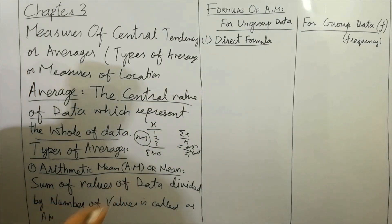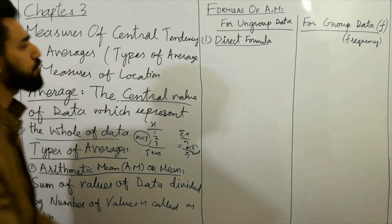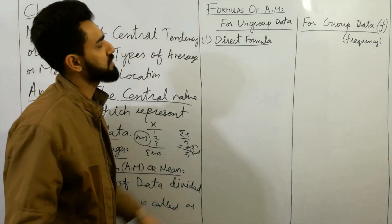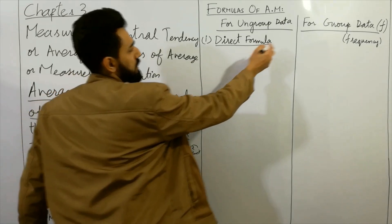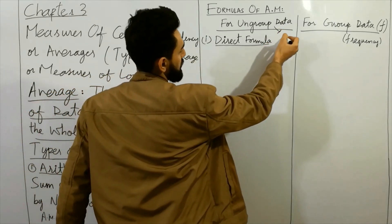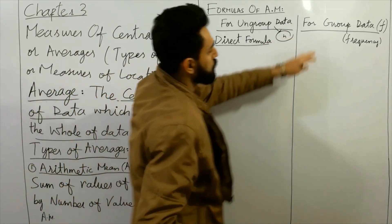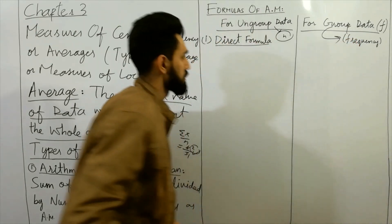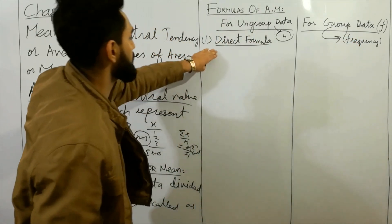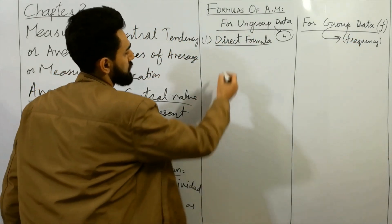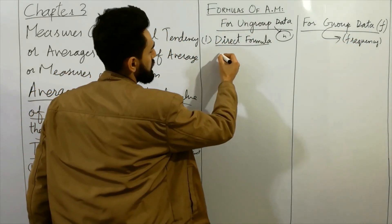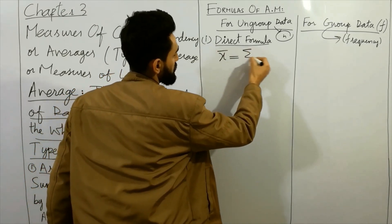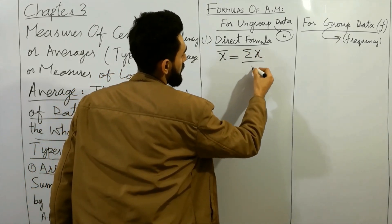Now I'll discuss the formulas for the arithmetic mean. For ungrouped data with n values, and for grouped data using frequency. The direct formula for ungrouped data is: x̄ = Σx divided by n.